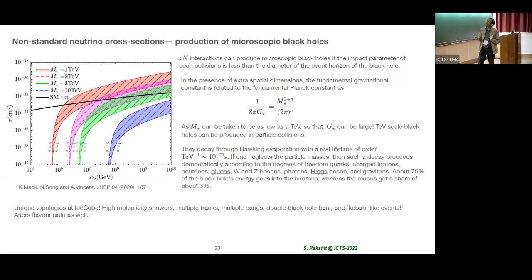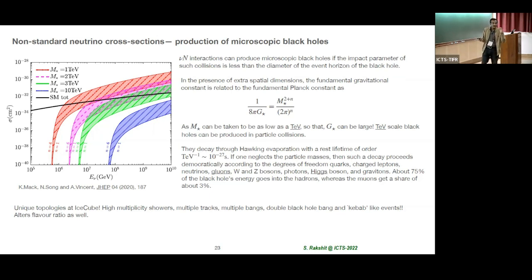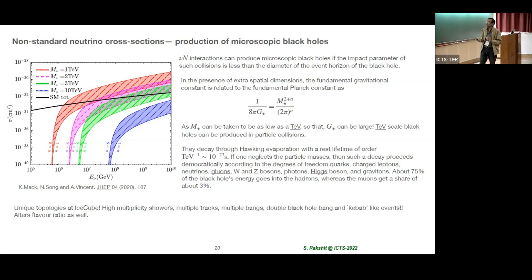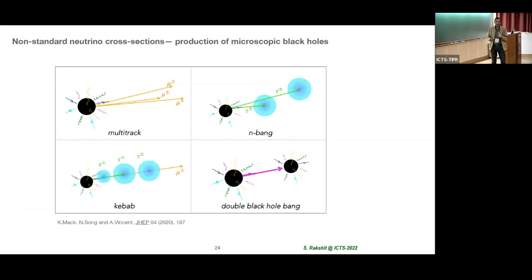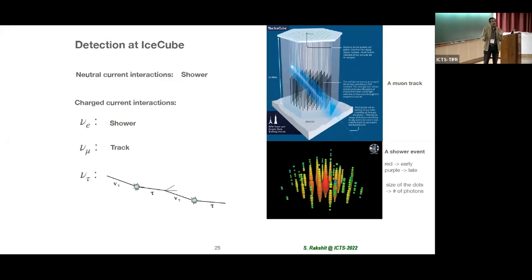There are other scenarios like production of microscopic black holes that can increase the cross section. If there are extra dimensions and the Planck scale comes down to the TeV scale, you can produce enough microscopic black holes — if the collision impact parameter is less than the Schwarzschild radius, they are produced, then decay by Hawking evaporation and can give fantastic events with new topologies visible at IceCube. So far we have not seen any of them.